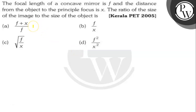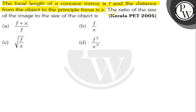Hello. Let's read the question. The question says: the focal length of a concave mirror is f and the distance from the object to the principal focus is x. So the ratio of the size of the image to the size of the object is what?